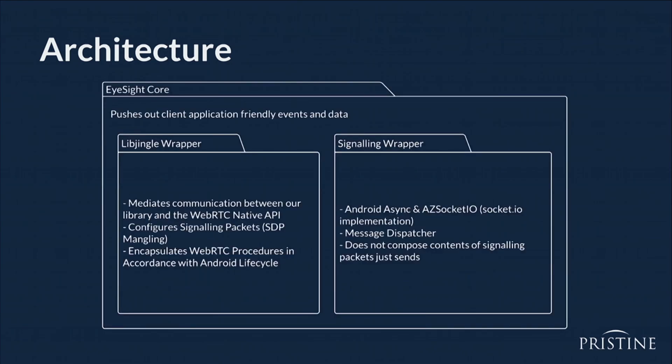Diving a little further into what's inside the core — the LibJingle wrapper mediates communication between our application and the native libraries. Since we're trying to be very cross-platform, we have to configure SDP packets for different contexts of a call. You might have an iOS device calling a Glass device, or an Android device calling a Glass device, or a web browser calling a Glass device. We handle all the SDP mangling inside this portion of the core. Probably the most important feature of our wrapper is that it encapsulates interaction with the native libraries in a way that's friendly with the Android lifecycle — so users feel like they're inside a real Android or iOS app, not just some video streaming application.